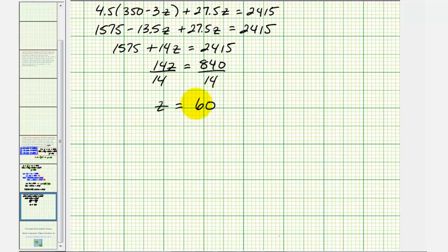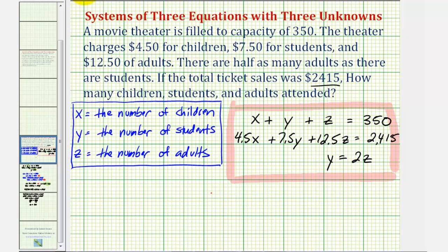If z is 60, we know there were 60 adults. Now performing back substitution to find y and x, we know that y equals 2 times z. So y equals 2 times 60, which is 120. Therefore, there are 120 students.